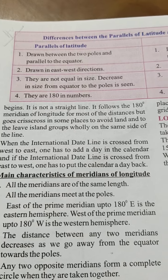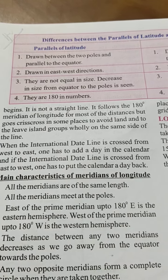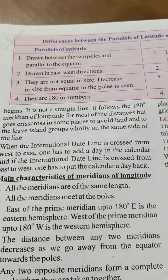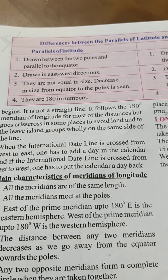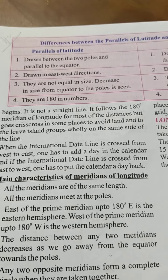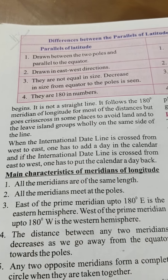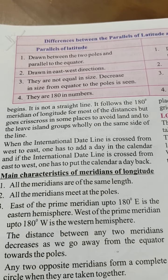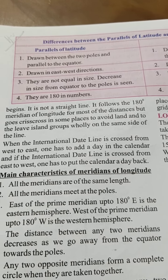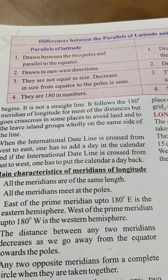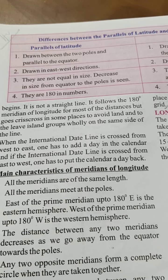The International Date Line is not a straight line. It follows the 180 degree meridian of longitude for most of its distance, but goes zig-zag in some places to avoid land. If the International Date Line is crossed from west to east, one has to add a day in the calendar. And if the International Date Line is crossed from east to west, one has to put the calendar a day back.